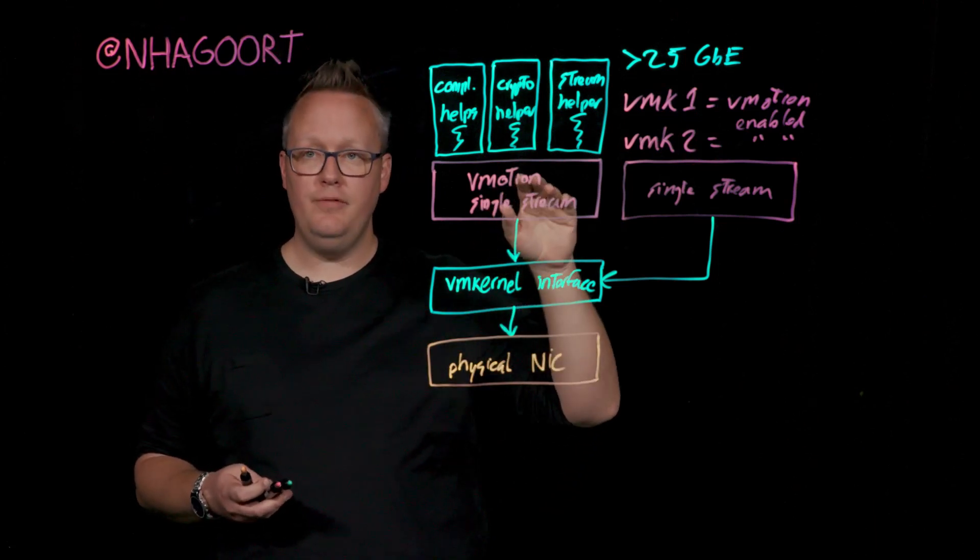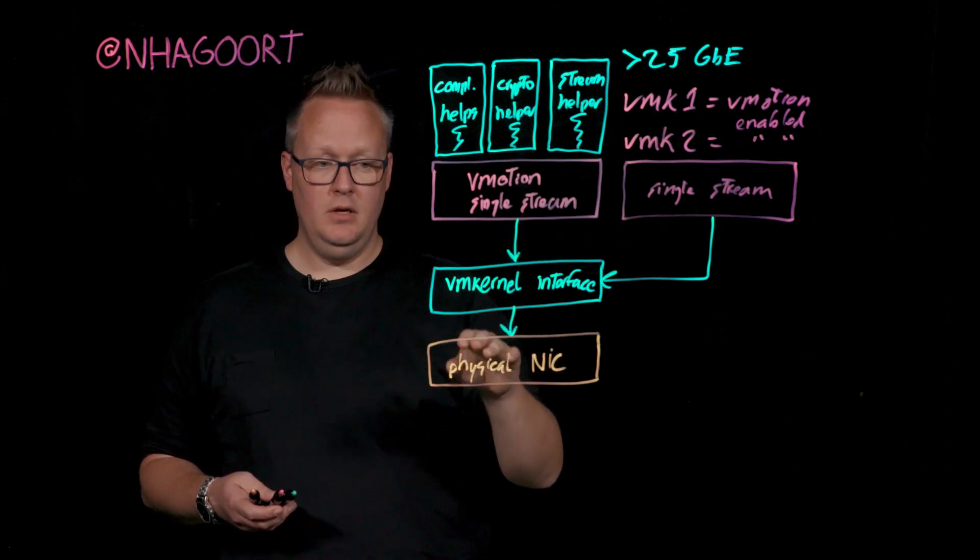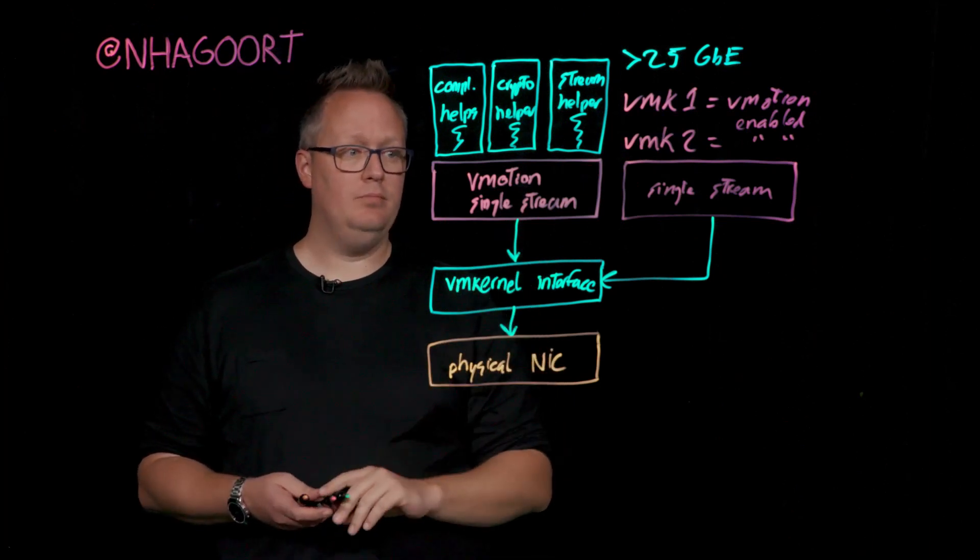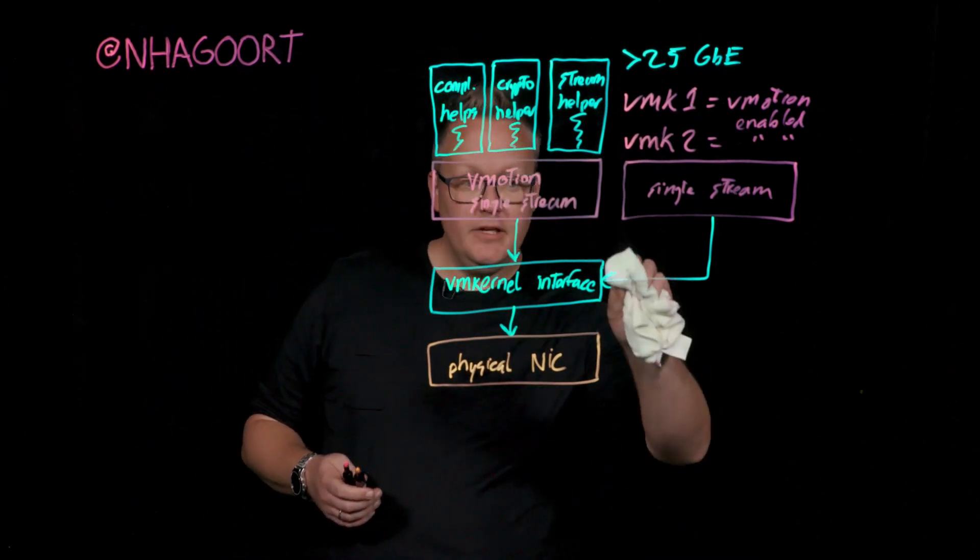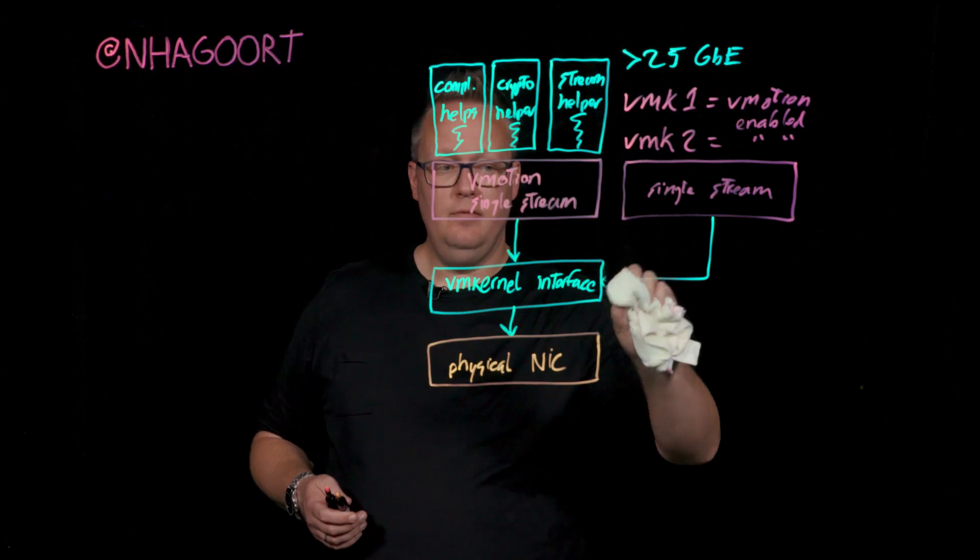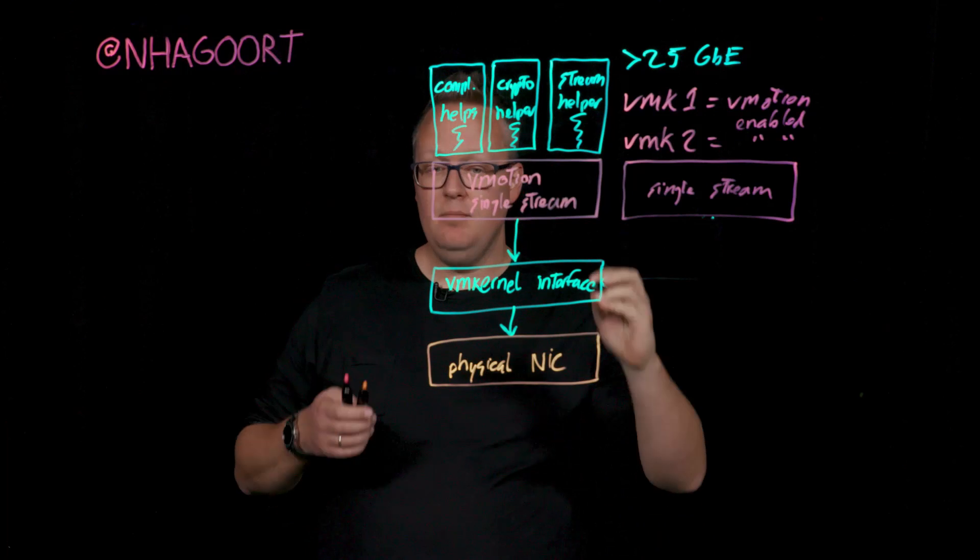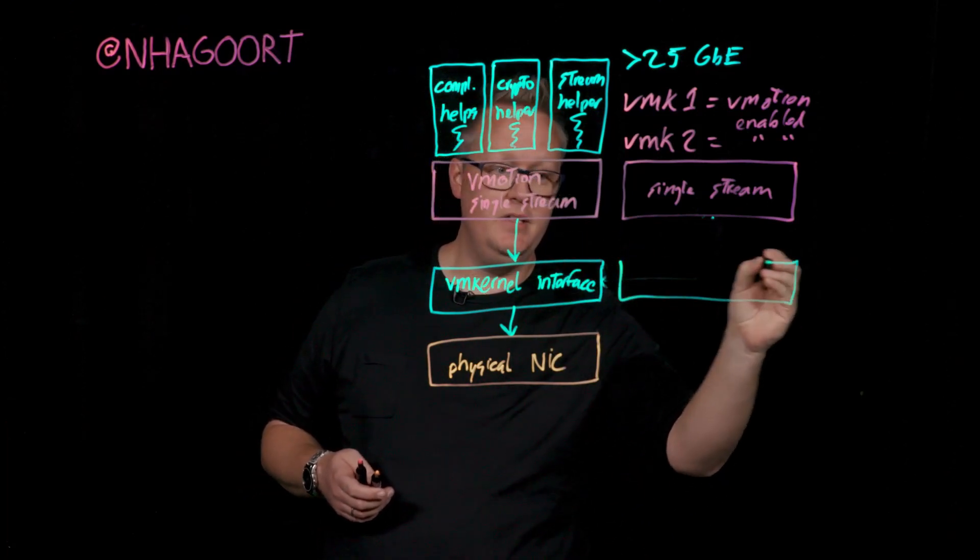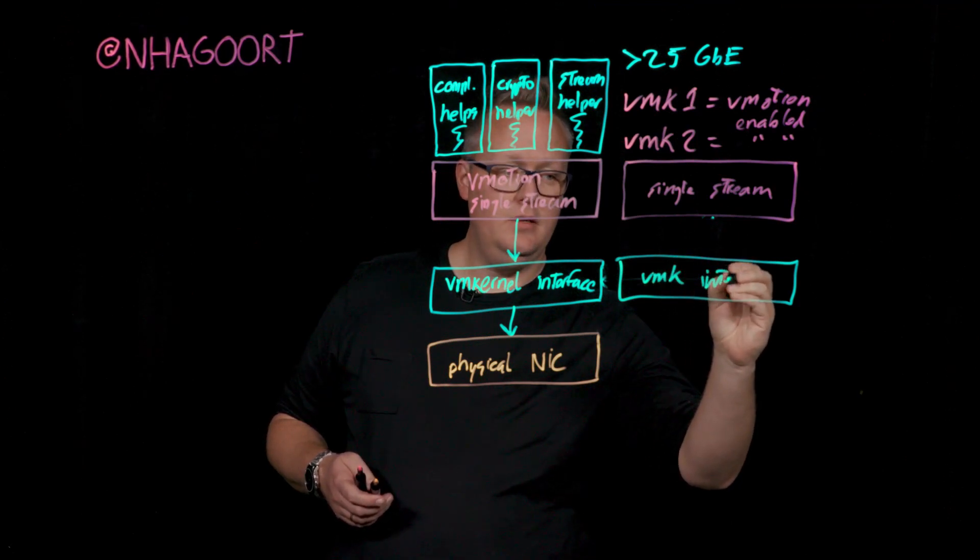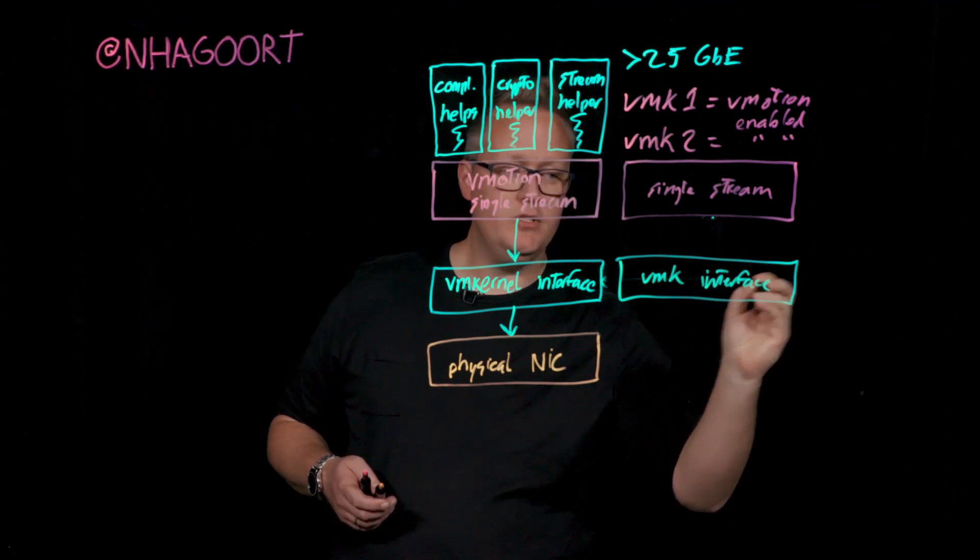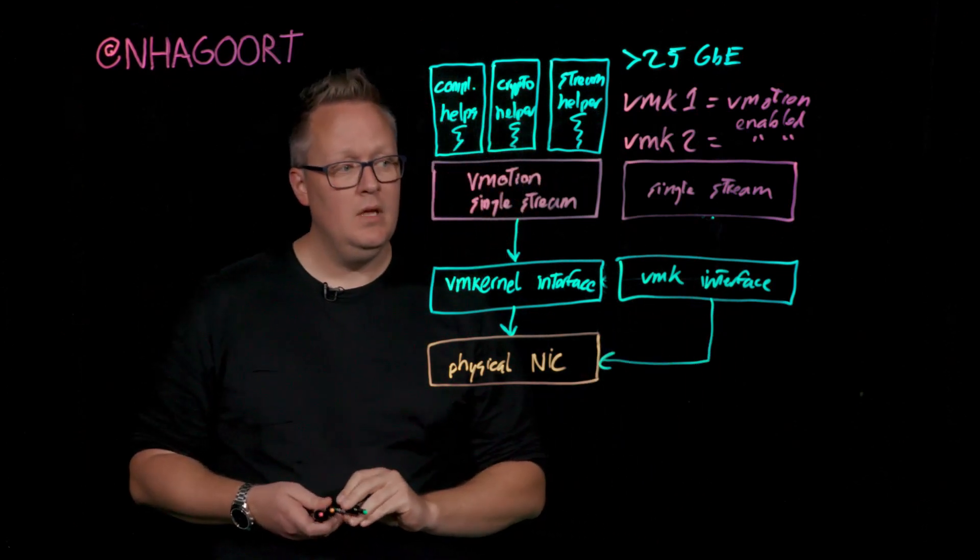Multiple VM kernel interfaces that are vMotion enabled running on the same physical NIC. Thinking about this, it's actually creating a different VM kernel interface. We are actually spinning up an additional one. A VM kernel interface that is vMotion enabled, and that is connected to the same physical NIC.